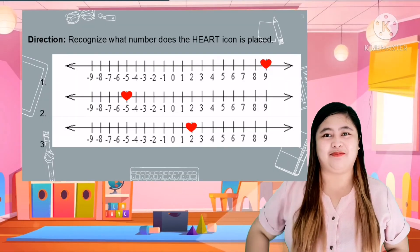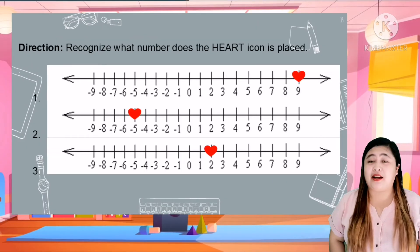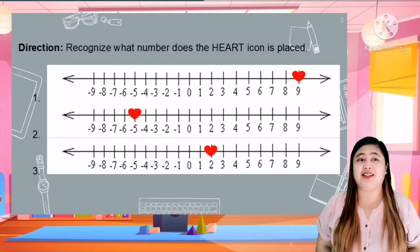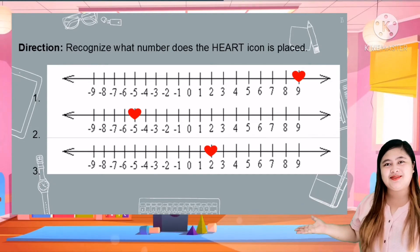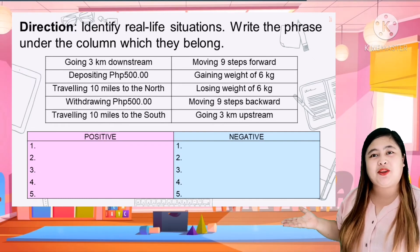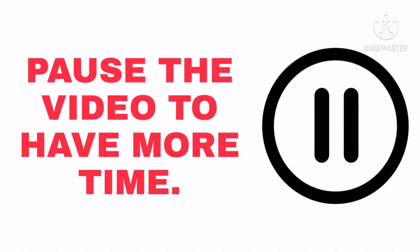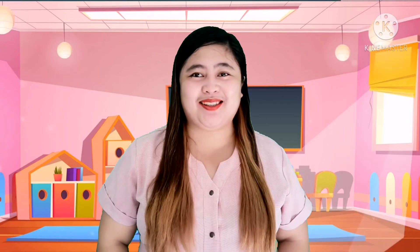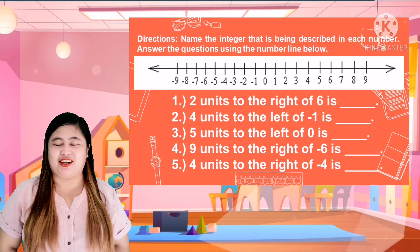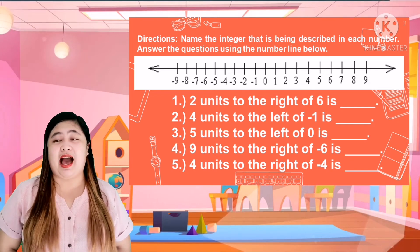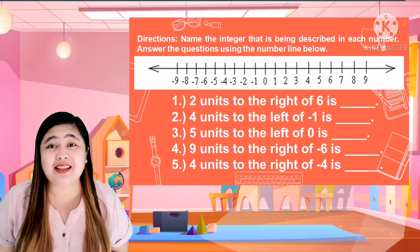Let's try this activity. Recognize — what number does the heart icon represent? For our next activity, identify real-life situations and write each phrase under the column where it belongs. Name the integer that is being described in each number. Answer the question using the number line and write your answer in your notebook.